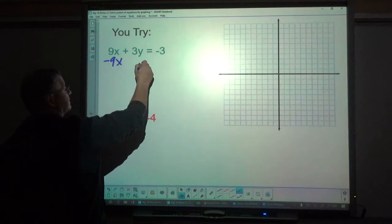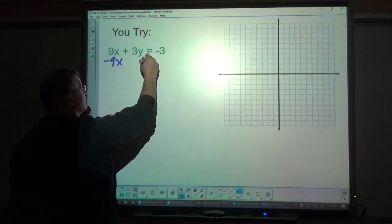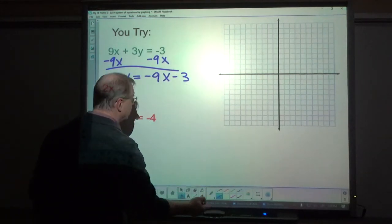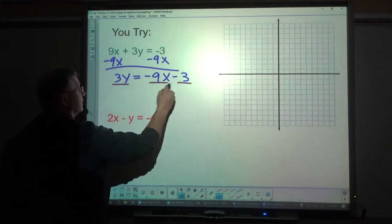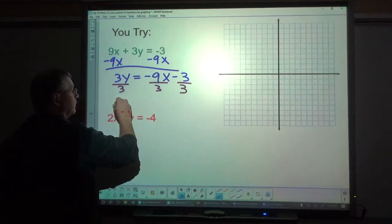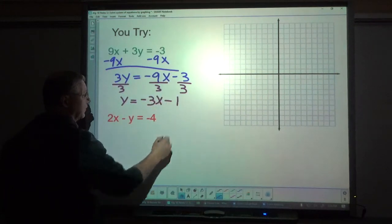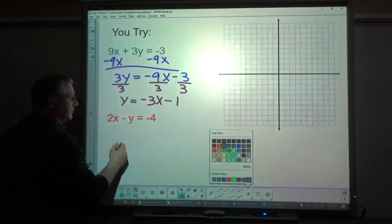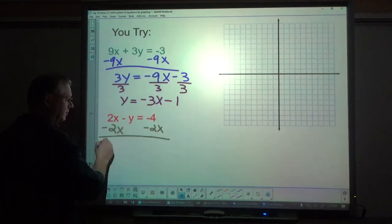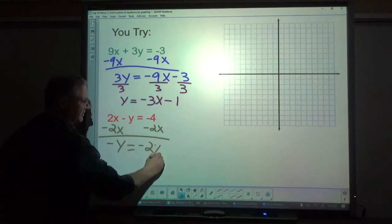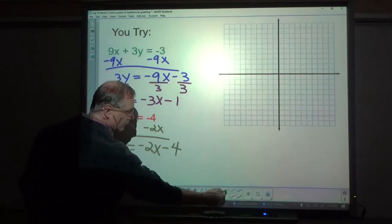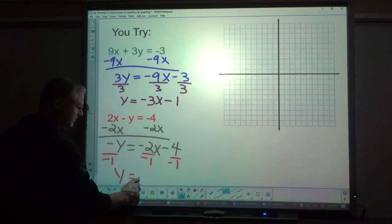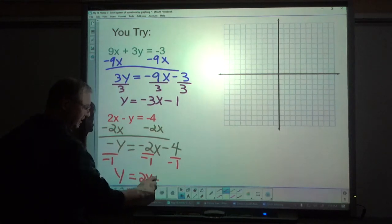So subtract 9x, add the opposite of the x term. And then divide everything on both sides by the coefficient of y. Y equals negative 3x minus 1. Down the bottom here, I'm going to subtract 2x from both sides. Negative y equals negative 2x minus 4. And then I am going to divide everything by a negative 1. Y equals 2x plus 4.